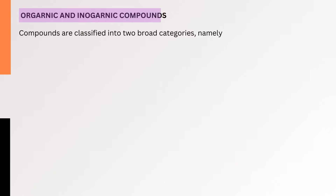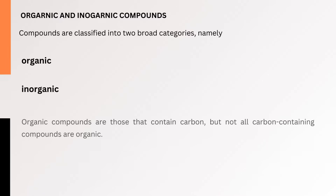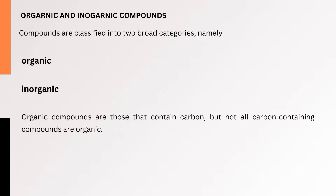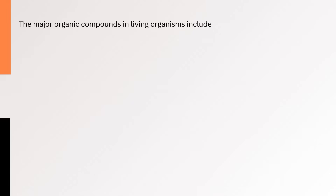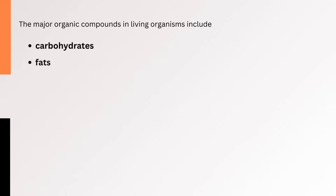Organic and Inorganic Compounds. Compounds are classified into two broad categories, namely organic and inorganic compounds. Organic compounds are those that contain carbon, but not all carbon-containing compounds are organic. The general rule is that organic compounds have carbon atoms that are bonded to hydrogen atoms, while inorganic compounds do not. The major organic compounds in living organisms include carbohydrates, fats, proteins, and nucleic acids.